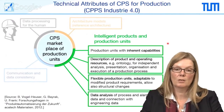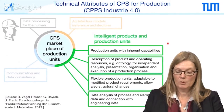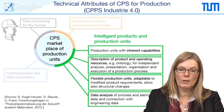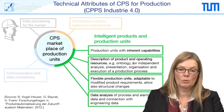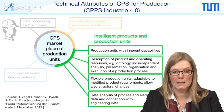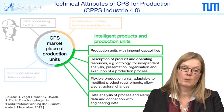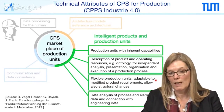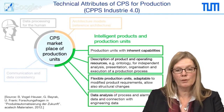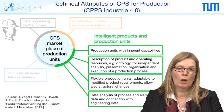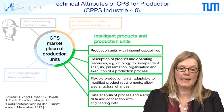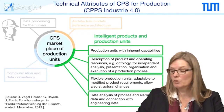Our focus this week is implementing intelligent products and production units. How can we do this? By having inherent capabilities — and here agents are required. By description of products and operating resources, in this case ontologies — we can imagine an ontology as a joint vocabulary. We want to reach flexible and adaptable production units and adapt those to structural changes like malfunctions. The fourth element is data analysis: to improve operation of plants, we must learn how the plant behaves by analyzing data and forecasting process quality.